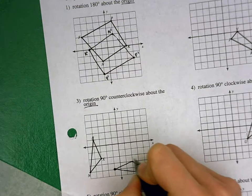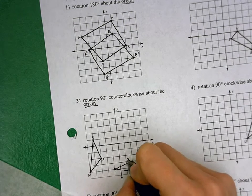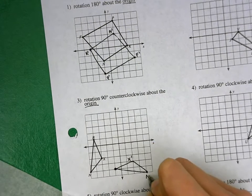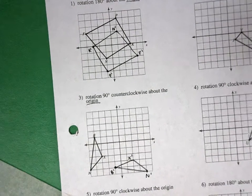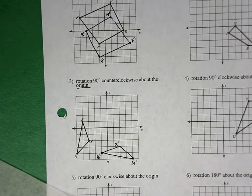So now we are at x prime, n prime, and b prime. And that's a rotation.